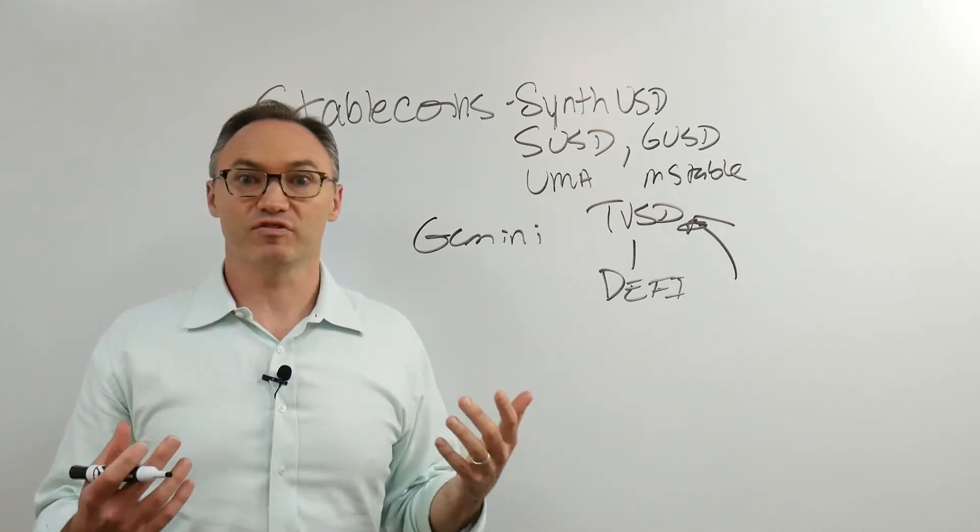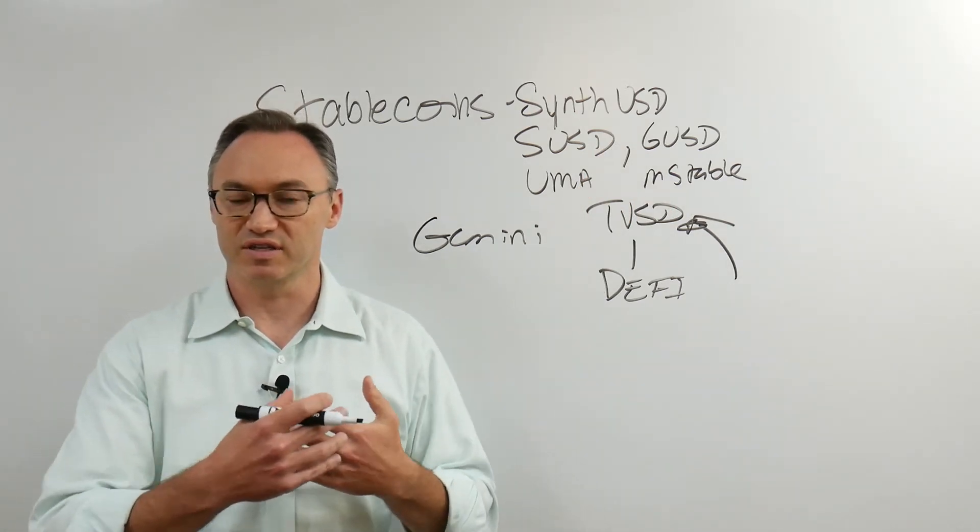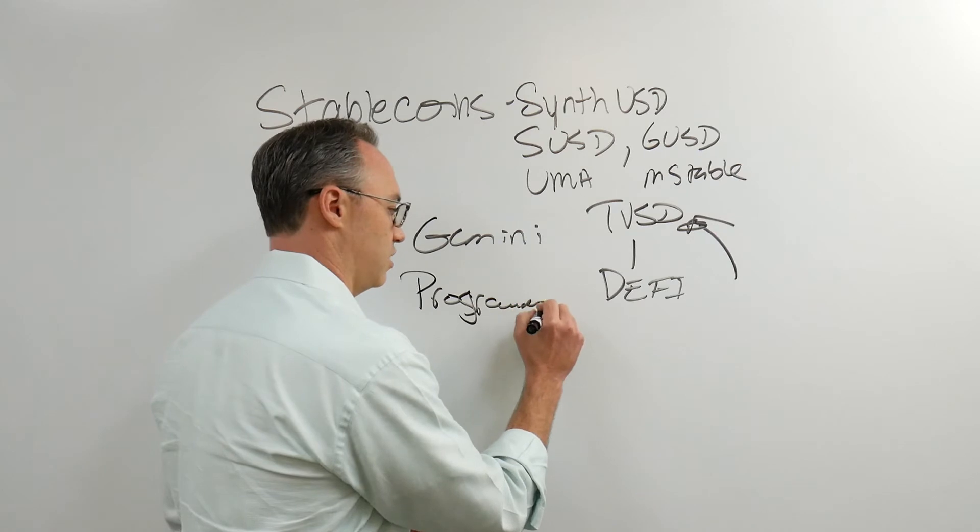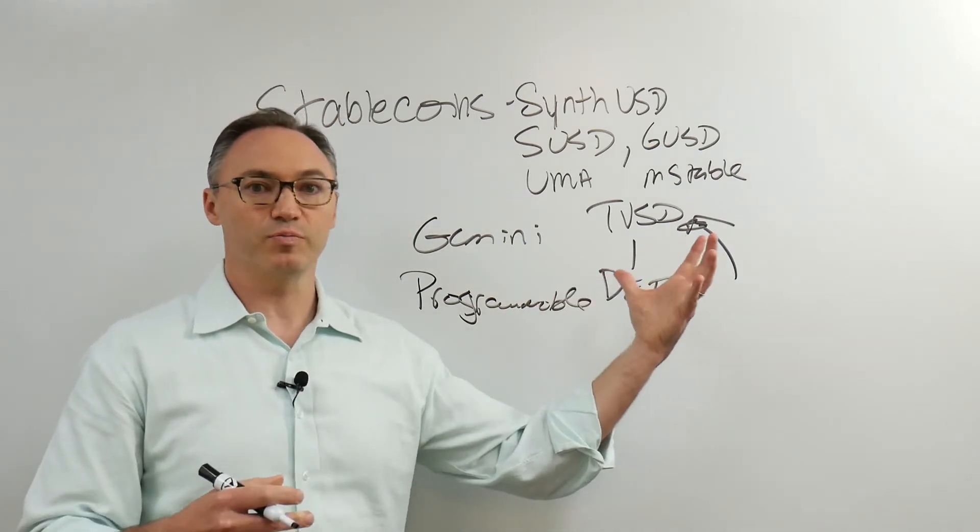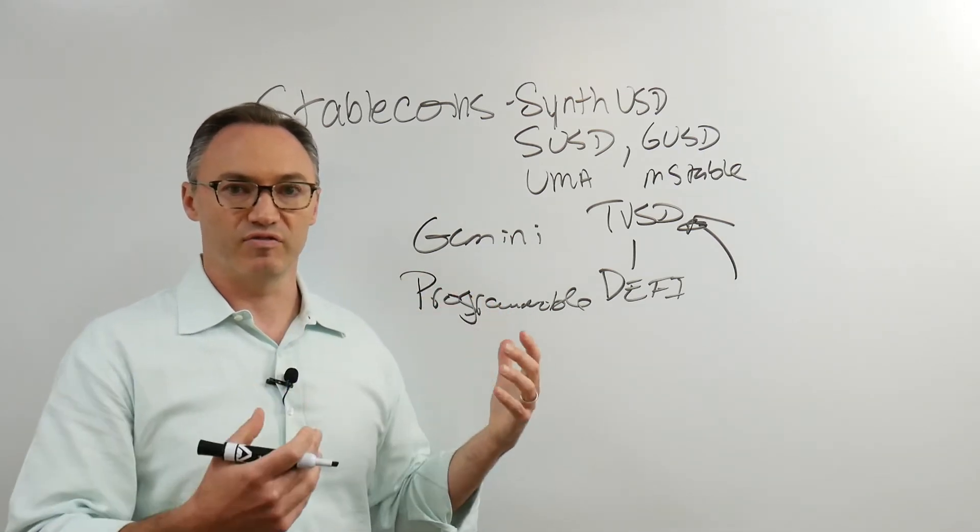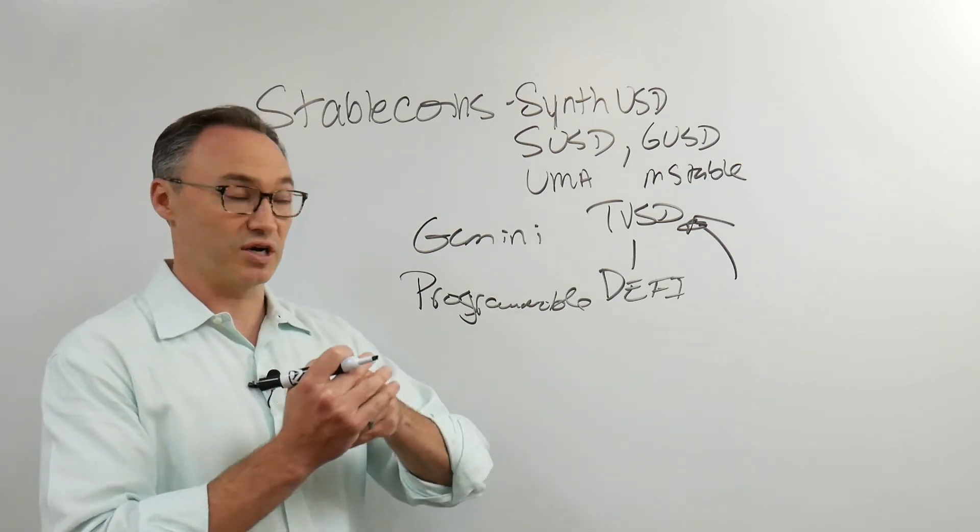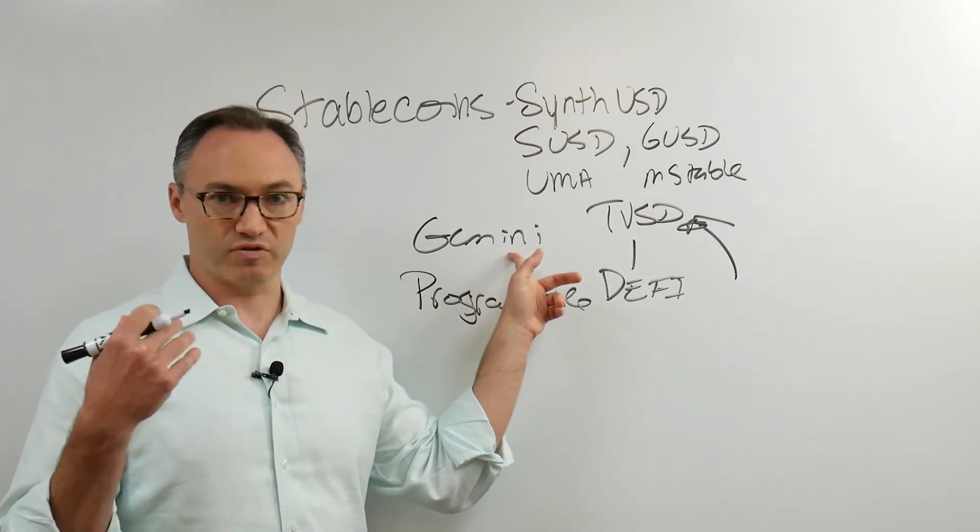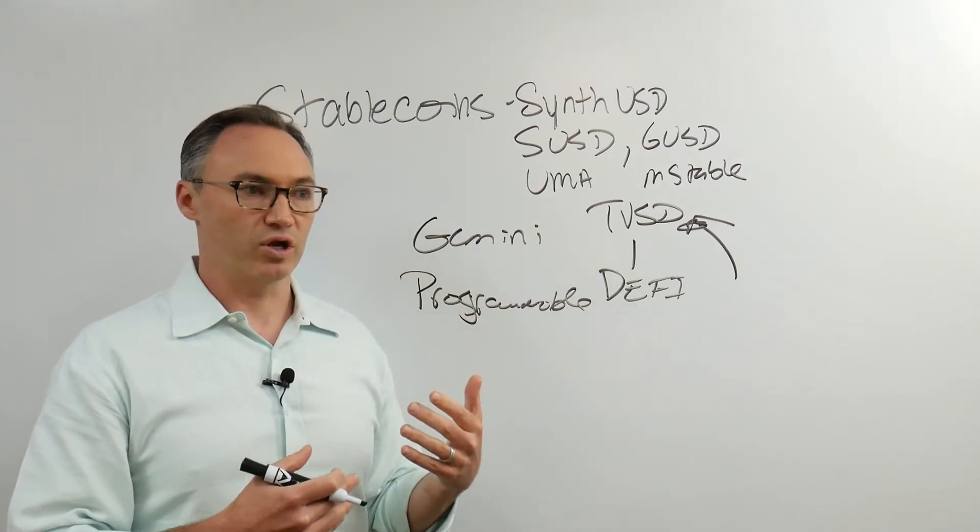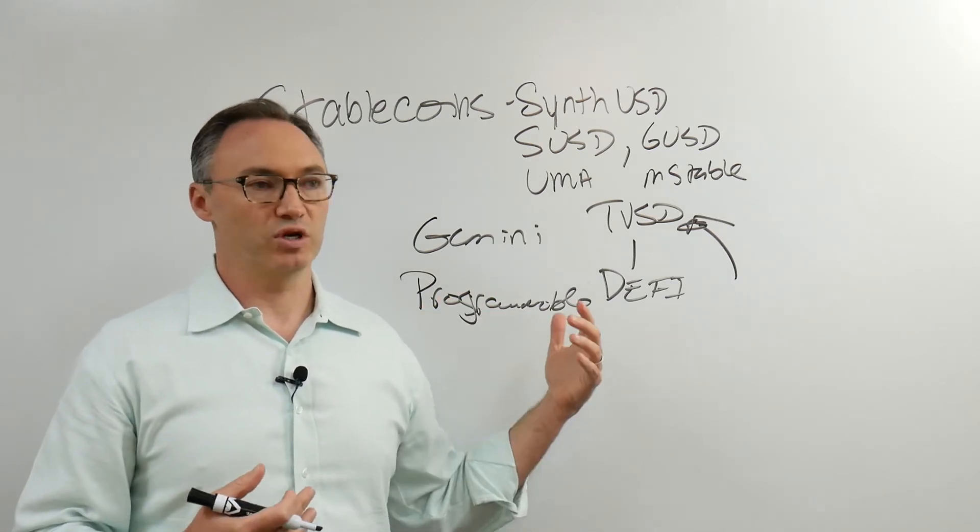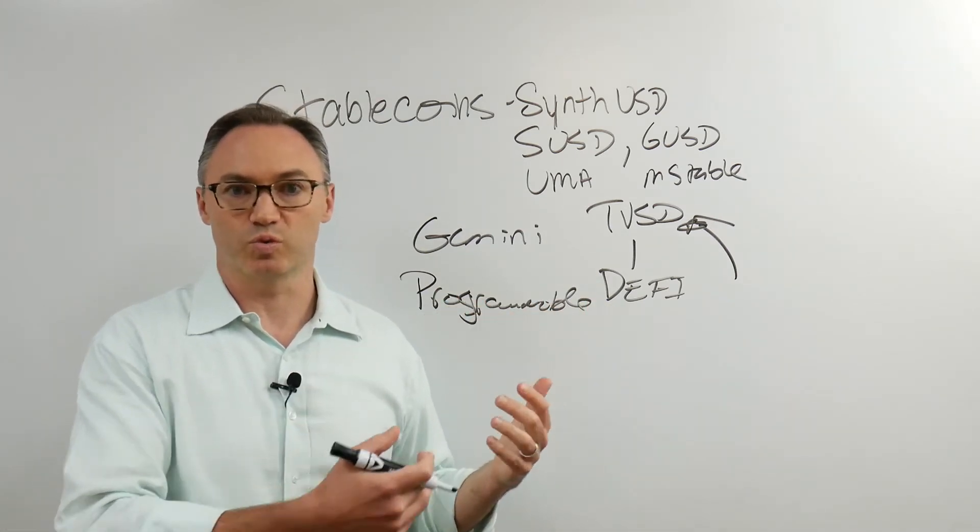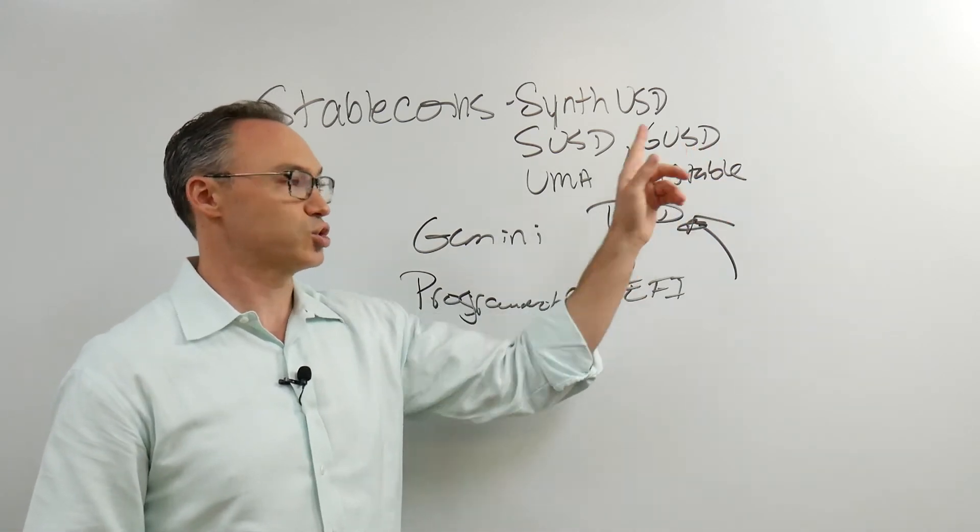Same with Gemini. It makes it easier and more efficient for accounting purposes because now you have something that's programmable. What you really need is a programmable dollar. And in order for them to make it easily programmable, they make it programmable either on their own chain or within their own network where they can have some level of control.